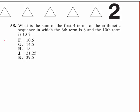What is the sum of the first four terms of the arithmetic sequence in which the sixth term is 8 and the tenth term is 13?